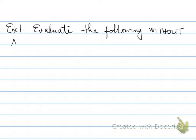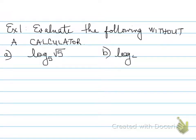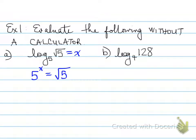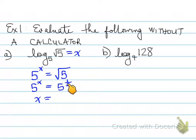Example 1 — evaluate without a calculator. For part A, log base 5 of root 5: set it equal to x, so 5 to the power of x equals root 5. Root 5 written as an exponent is 5 to the power of one half. Since 5 to the x equals 5 to the one half, and the bases are equal, the exponents are equal — so x equals one half.